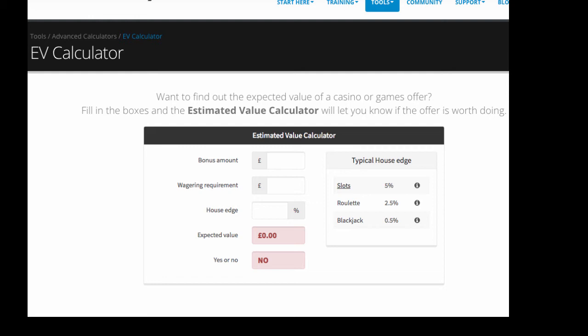And you can actually see there is quite a big differential between the house edge on slots. So it can vary with the particular slot that you've got the offer on. But 5% we always use as an industry standard. Roulette generally 2.5% and Blackjack half of 1%. Again, that does vary with the variations, but we don't get too many Blackjack and Roulette offers nowadays. That was more reserved for the good old days. But anyway, more about that another day.